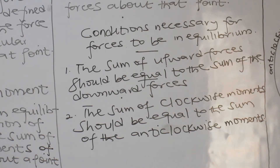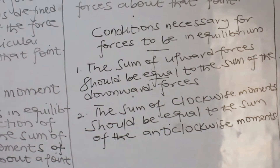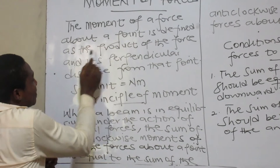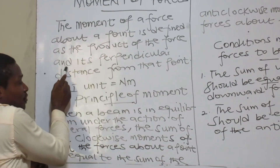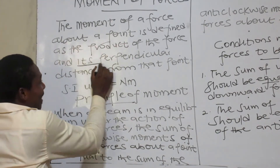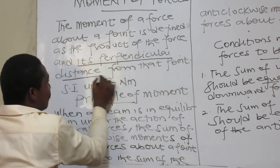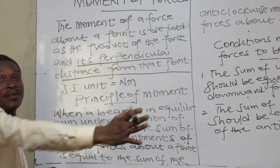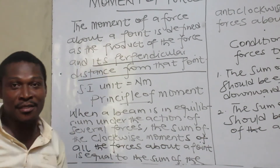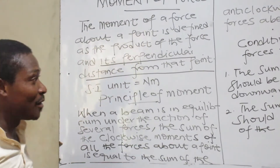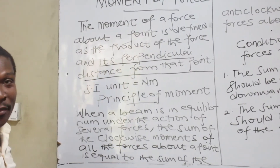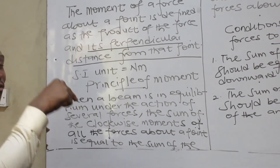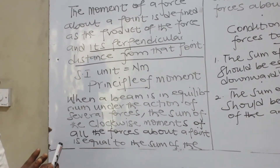Before I go to the question, I want us to look at the definition once again. The moment of a force about a point is defined as the product of the force — there is a key word — and its perpendicular distance from that point. This key word controls everything in the calculation. That is the secret.